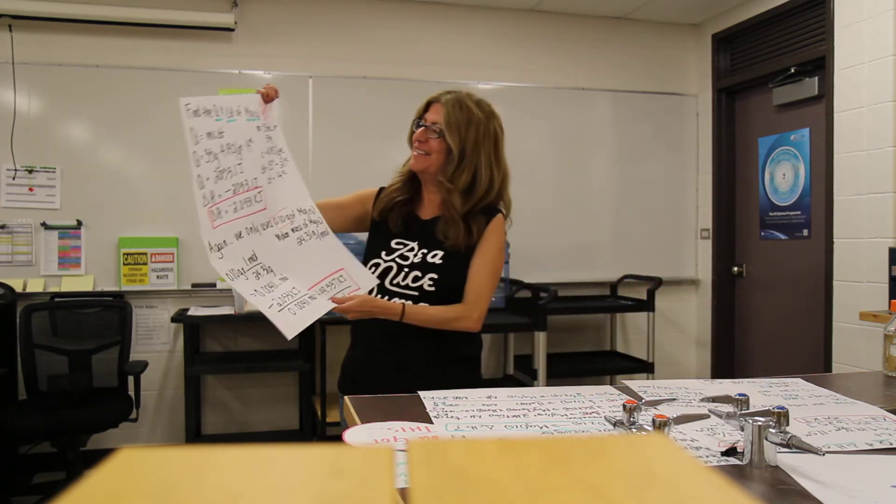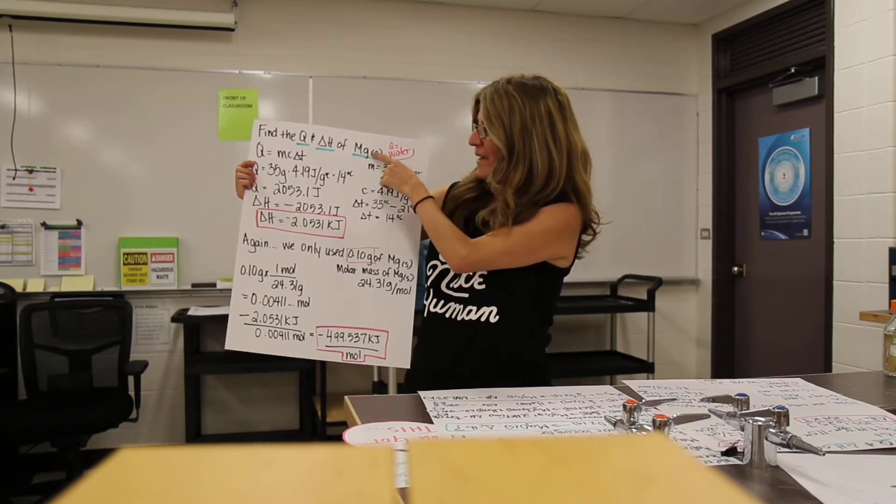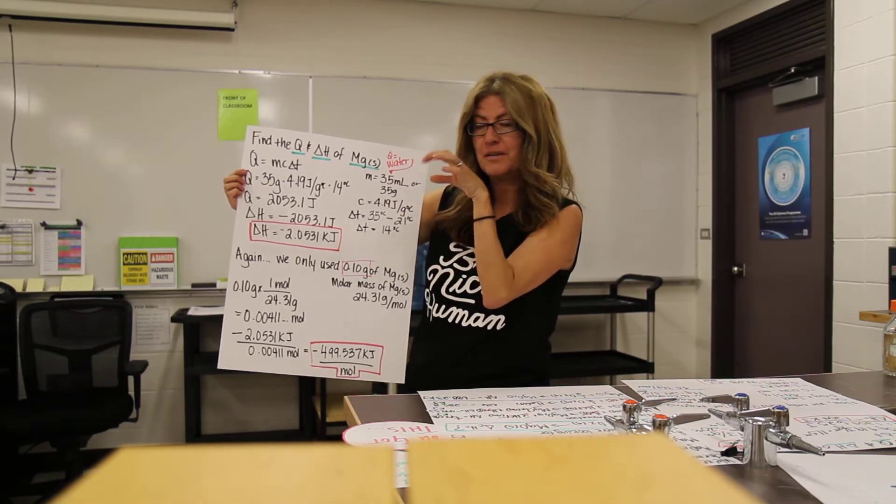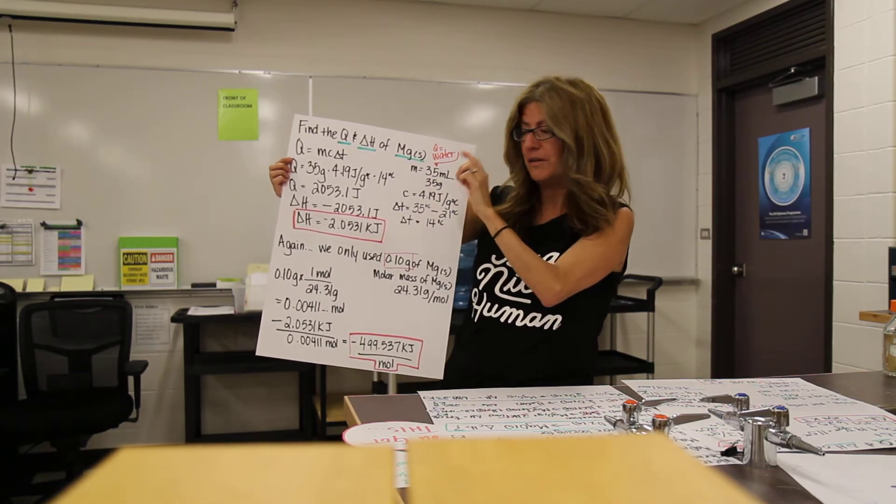First, we're going to find the Q and the delta H of our magnesium. Because we're finding Q, kiddos, we have to take our information from the surroundings. So Q, in this case, is we're looking for the information using the water.